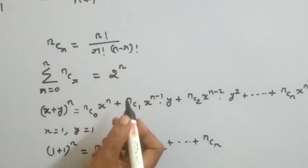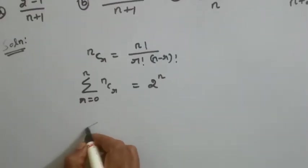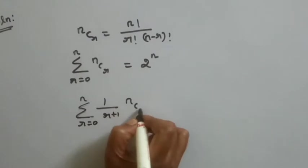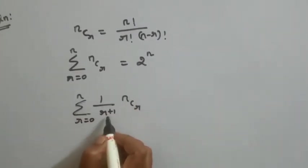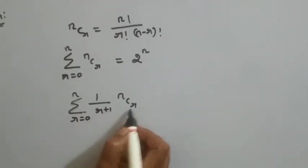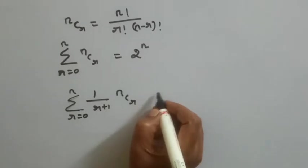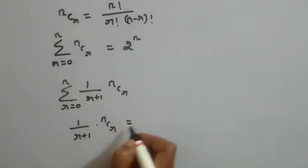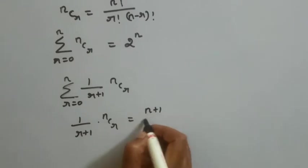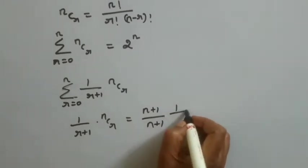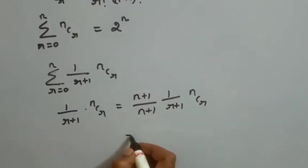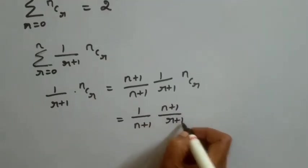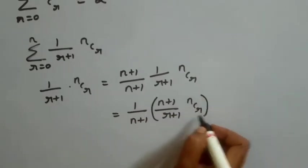Now let's discuss applying these two formulas to the given problem and its solution. The summation R equal to 0 to N of 1 by R plus 1 into NCR. We look at the single function 1 by R plus 1 into NCR and work to simplify it.